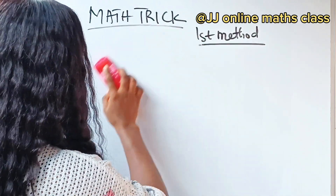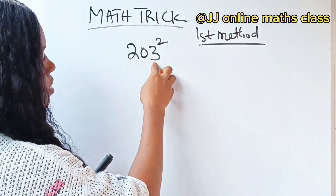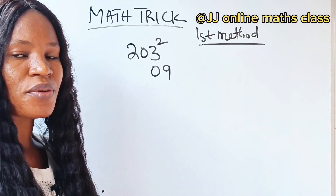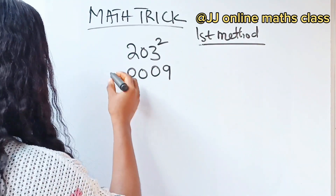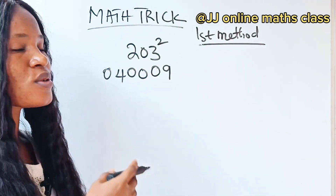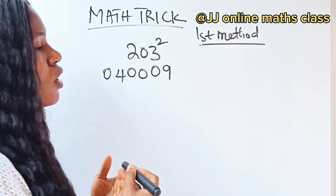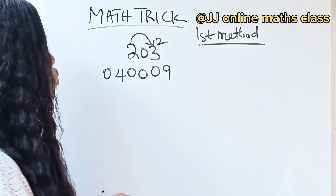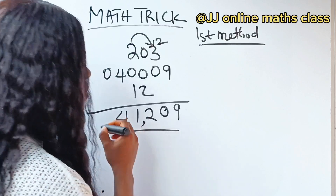Now let's use the second method, which is easier, to solve 203 squared. Three squared is nine — write zero nine. Zero squared gives us zero — write zero zero. Two squared gives us four — write zero four. Notice that two times zero gives zero, and double of zero is zero, so let's forget about it. Three times zero is zero, and double of zero is still zero — forget about it. The only important figures are two and three. Two times three gives six, and double of six is twelve. Write it at the center and add — same result as the first method: 41,209.